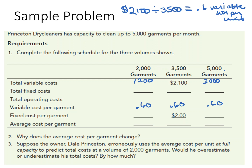Now let's look at total fixed cost. Total fixed costs do not vary in total, but the fixed cost per item will vary depending on the volume. The fixed cost per garment is $2 if they make 3,500 garments. So if I take that $2 and multiply it by 3,500, I get $7,000 in total fixed cost. Now I know my total fixed costs are $7,000.